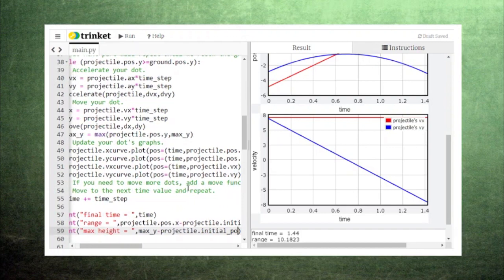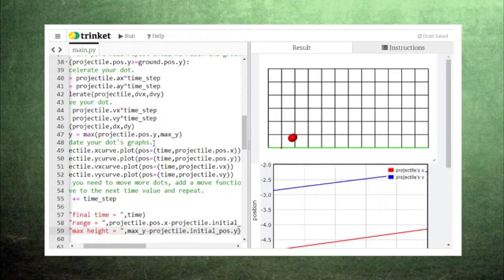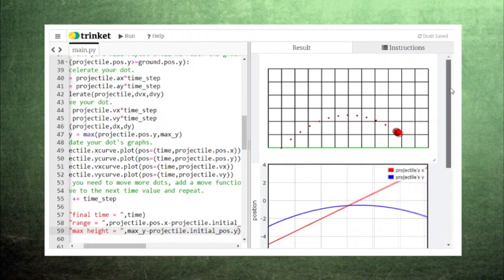Now, after the loop finishes, we can print the difference between the maximum y value and the original y value to show us the maximum height.